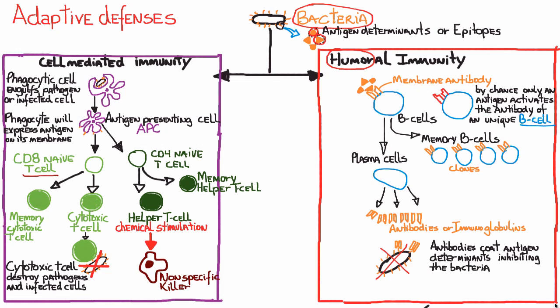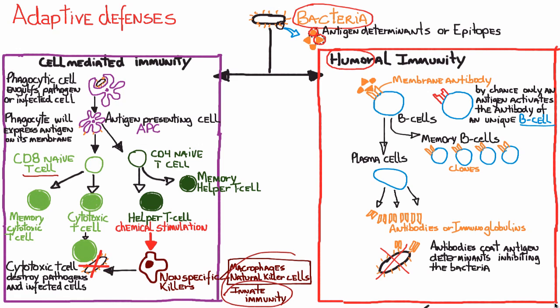One thing this chemical stimulation can do is stimulate non-specific killers — like macrophages and natural killer cells, which are part of the innate immunity — to multiply at a faster pace. These innate cells kill generically without specificity. In some cases you need more specificity, like the cytotoxic T cell that recognizes a specific antigen and finds only the bacteria expressing that antigen. The innate cells are more generic, but they still help.